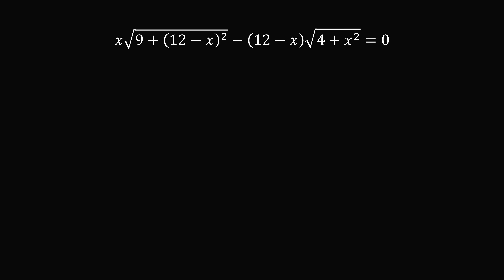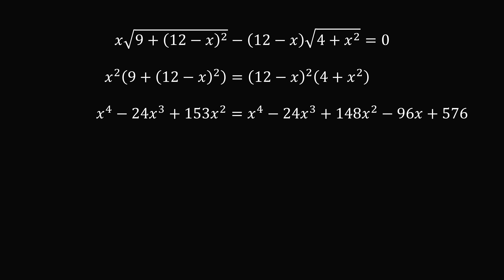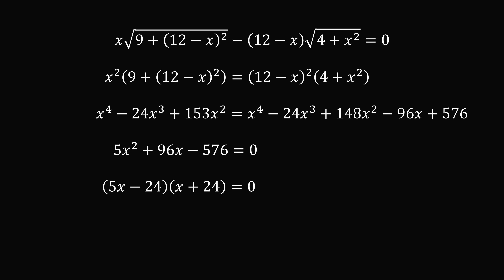To simplify this equation, we move the negative term to the right-hand side, then square both sides to eliminate the square roots. We expand the binomials and simplify — skipping the tedious calculations — and a nice thing happens: the x to the 4th and x cubed terms cancel out, leaving just a quadratic equation: 5x squared plus 96x minus 576 equals zero. This factors as 5x minus 24 multiplied by x plus 24 equals zero, giving two solutions: x equals 24 over 5 and x equals negative 24.